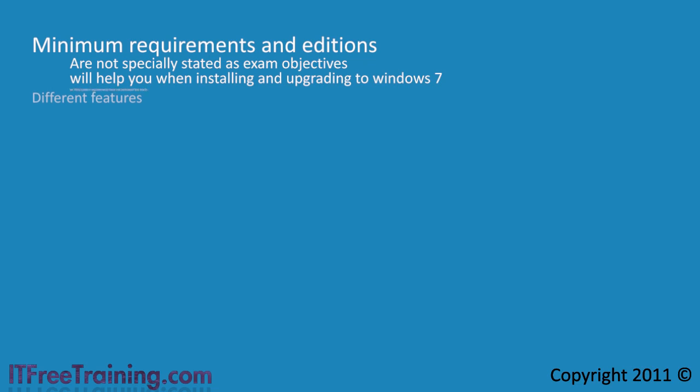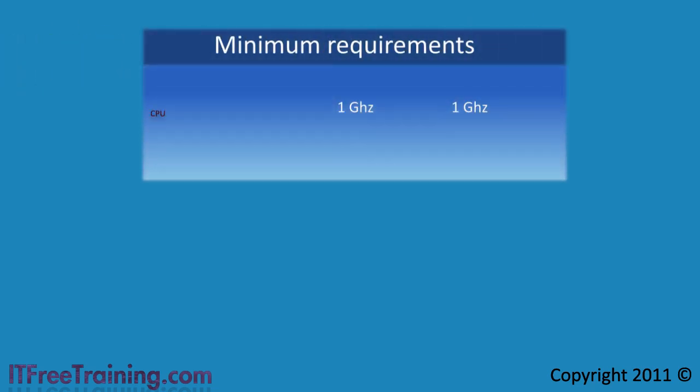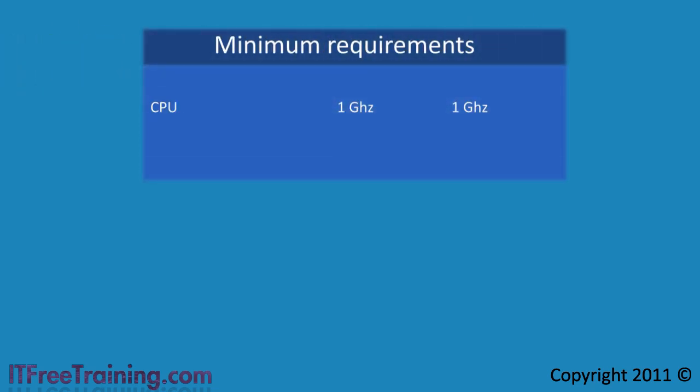If you are running Windows Vista, you will be happy to know that the system requirements have not increased too much. In a lot of cases, the only hardware upgrade you will need to perform will be the installation of more RAM. For the minimum requirements, you need a 1 gigahertz CPU, either 32 bit or 64 bit, the same as Windows Vista.